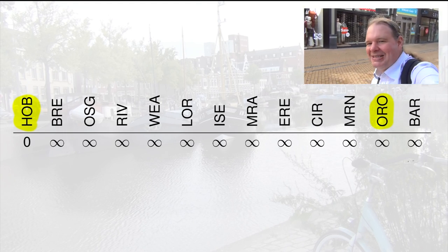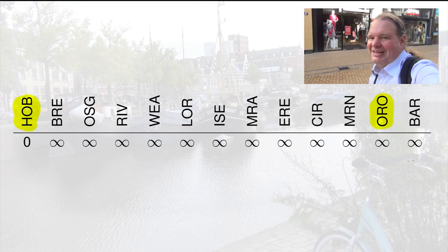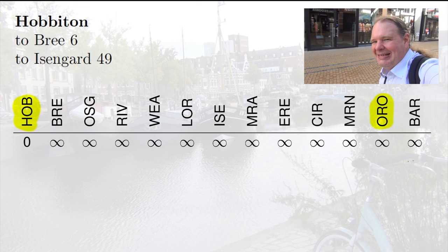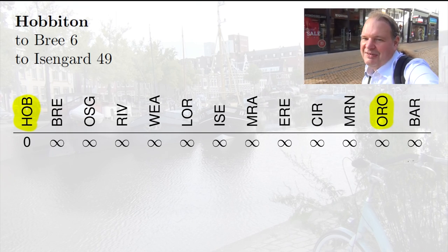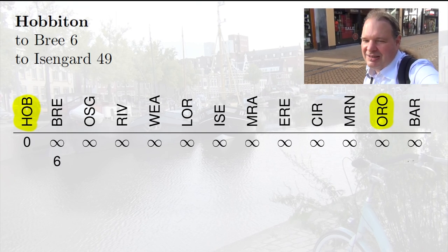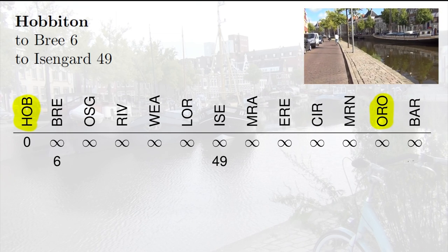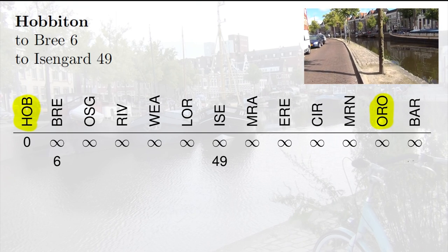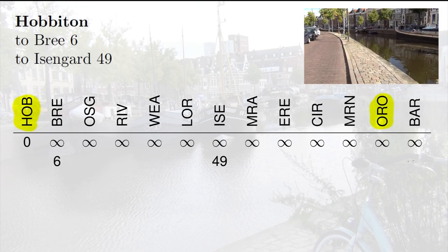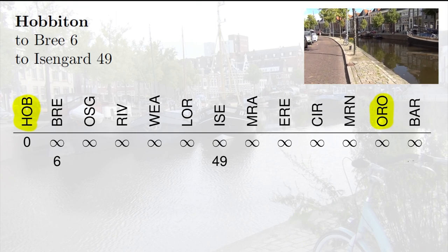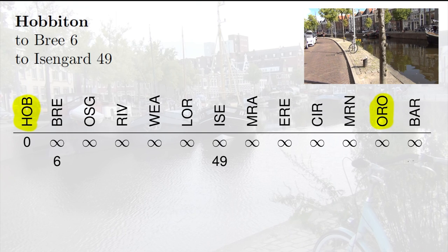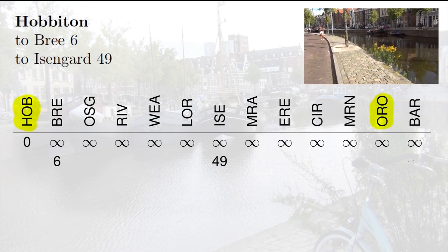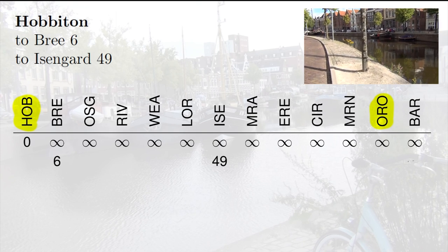We can now improve our distance estimates by considering the roads from Hobbiton. Consulting our linked list, from Hobbiton I can go to Bray in six days and to Isengard in 49 days, giving us better estimates for those two places. Each row represents a different estimate: the first row is what we can write without consulting the linked list at all, and the second row is after we have considered the linked list from our starting point. Each row represents our estimates after updating from one particular place.